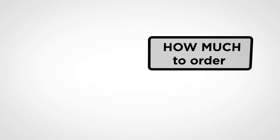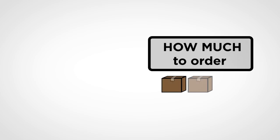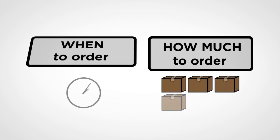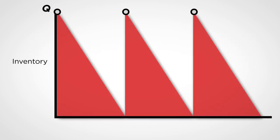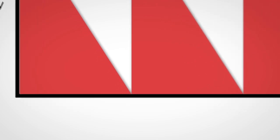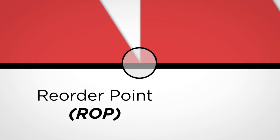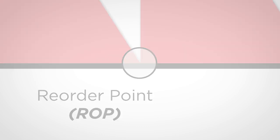So far we have determined how much to order. Now let's consider the timing of the orders. Assuming that the lead time is zero, we order whenever the inventory level reaches zero. The inventory level at which we place our orders is called the reorder point, or ROP. When lead time is zero, the reorder point is equal to zero. In more general cases, of course, the reorder point may not be zero.